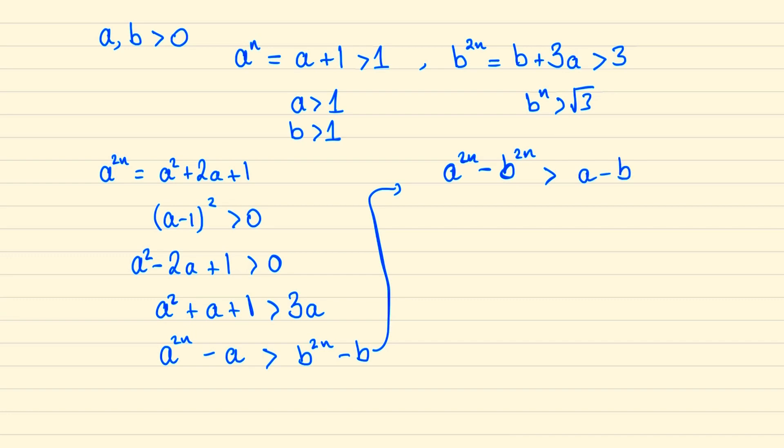Now if a were to equal b, then we can realize that a to the 2n minus b to the 2n evaluates to zero, meaning that we know a minus b must be a factor.